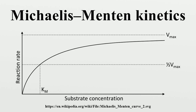The resulting reaction rates predicted by the two approaches are similar, with the only difference being that the equilibrium approximation defines Km as the dissociation constant, whilst the quasi-steady-state approximation uses a broader expression. The Michaelis-Menten equilibrium analysis is valid if the substrate reaches equilibrium on a much faster time scale than the product is formed. By contrast, the Briggs-Haldane quasi-steady-state analysis is valid if the enzyme concentration is much less than the substrate concentration, or if Km is large.